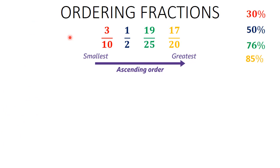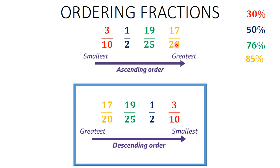We have successfully proved that 3 over 10 is smaller than 1 over 2, which is smaller than 19 over 25, which is smaller than 17 over 20 — that's ascending order, from the least to the greatest fraction value. Descending order is just a reverse of that. Thank you, see you next time.